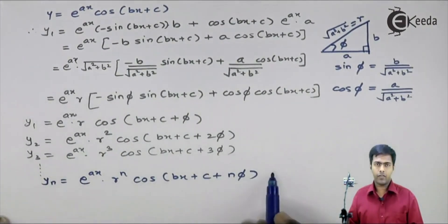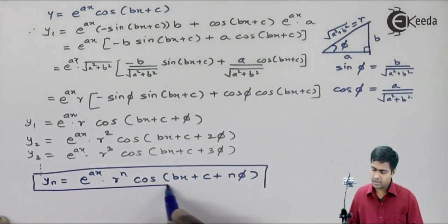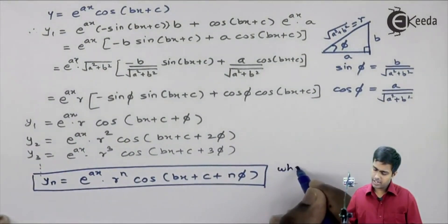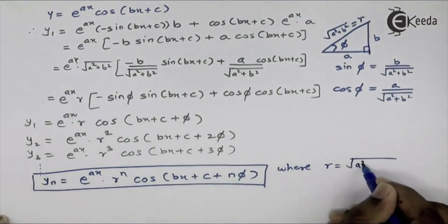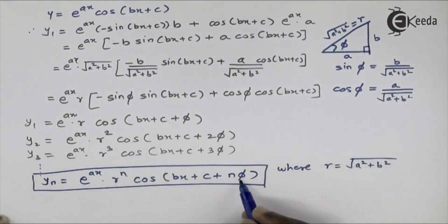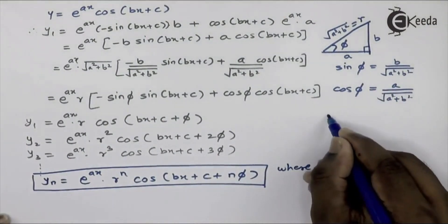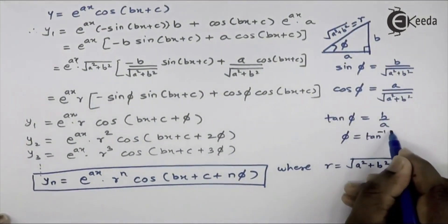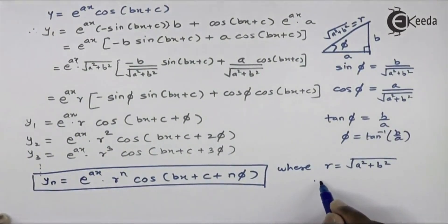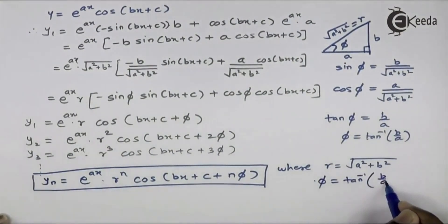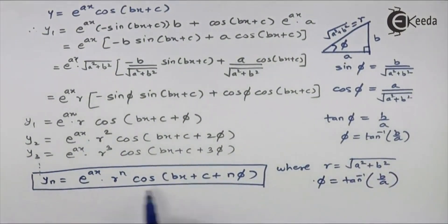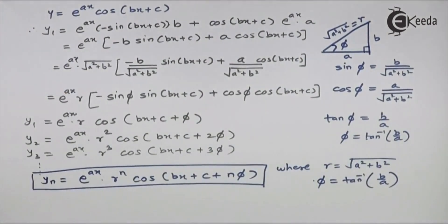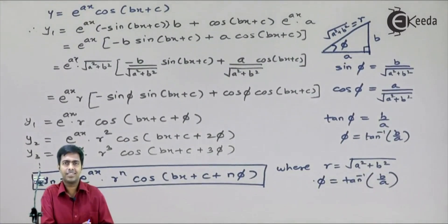So for the nth derivative we get n phi. This is the formula for the nth derivative of this function, where r equals root of a squared plus b squared. To find phi, sin phi upon cos phi gives tan phi equals b by a, and hence phi equals tan inverse of b by a. This is the value of phi. So this is the formula for the nth derivative of e raised to ax into cos of bx plus c, which we will use to solve many problems. Thank you.